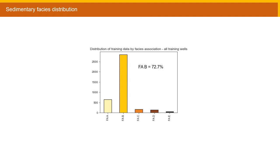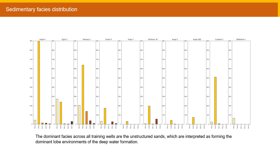In terms of sedimentary facies distribution across all training wells, facies B, the unstructured sands, are clearly dominant as they are interpreted as forming the main lobe environments of the deep water formation. As you can see here, it accounts for 72.7% of the facies interpreted. This can be further illustrated by the breakdown between all 10 wells which shows a common trend of a dominant facies B. However, wells Angel 4, Egret 2 and Rinne 3 shown here have a slightly more varied distribution with Angel 4 dominant in facies B, Egret 2 dominant in facies A, and Rinne 3 having the most even distribution overall relative to the other wells. And it was for this reasoning these wells were chosen as the first three training wells for the three well scenario.